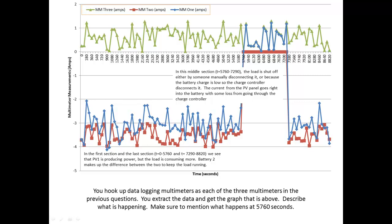The green line is the measurements that came from multimeter 3, or PV1. The blue line came from battery 2. And the red line is the current draw from the load.